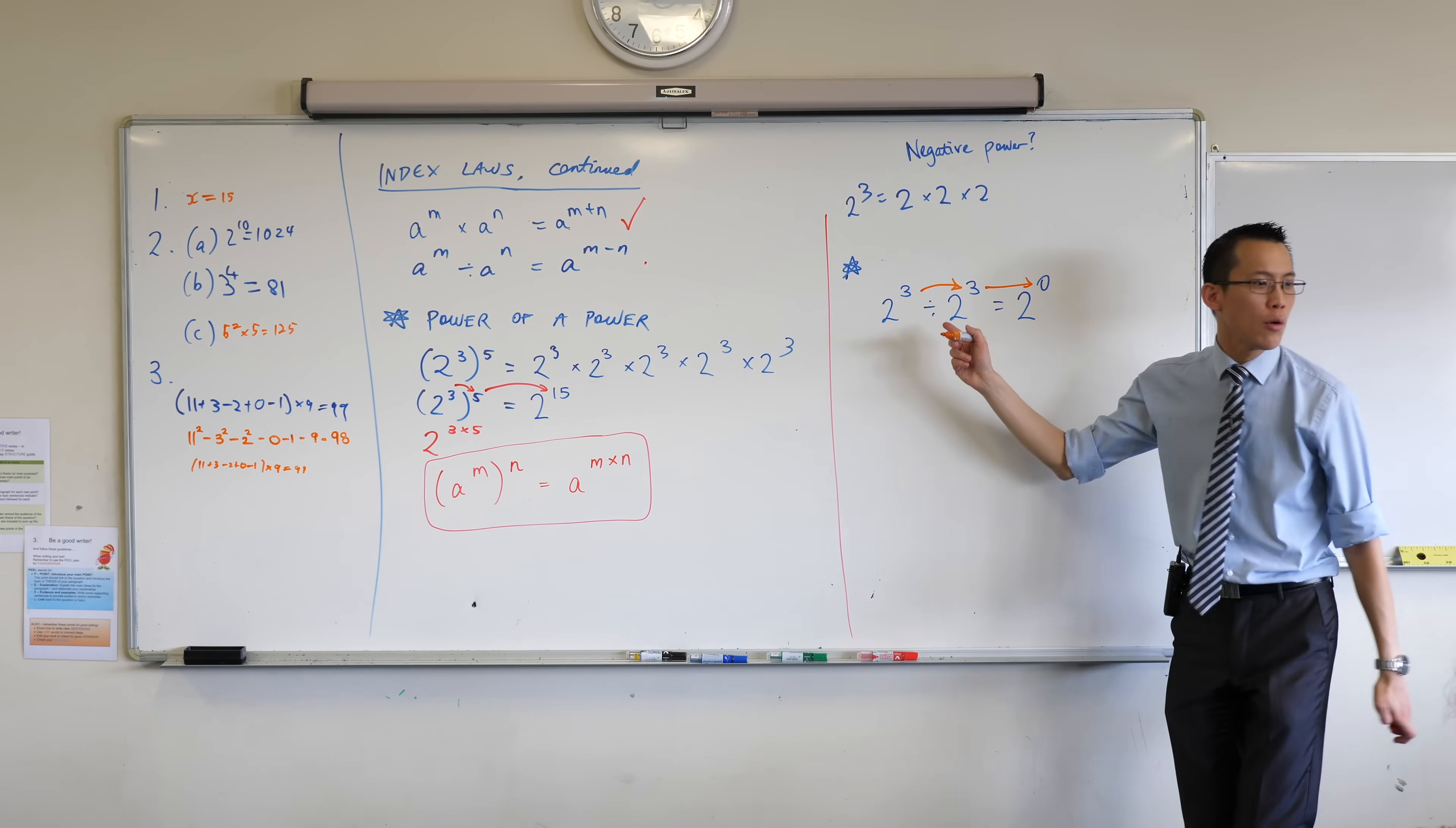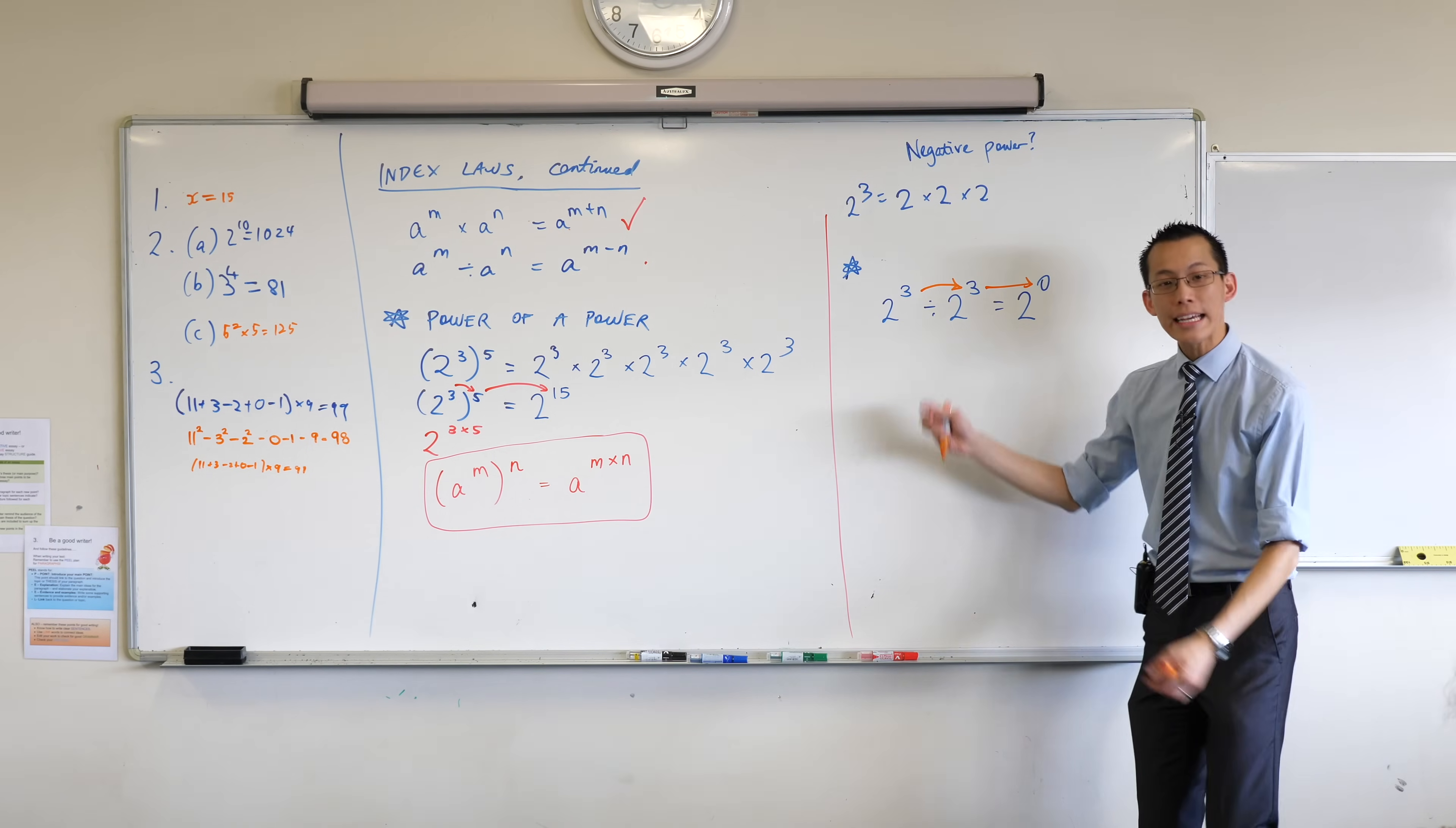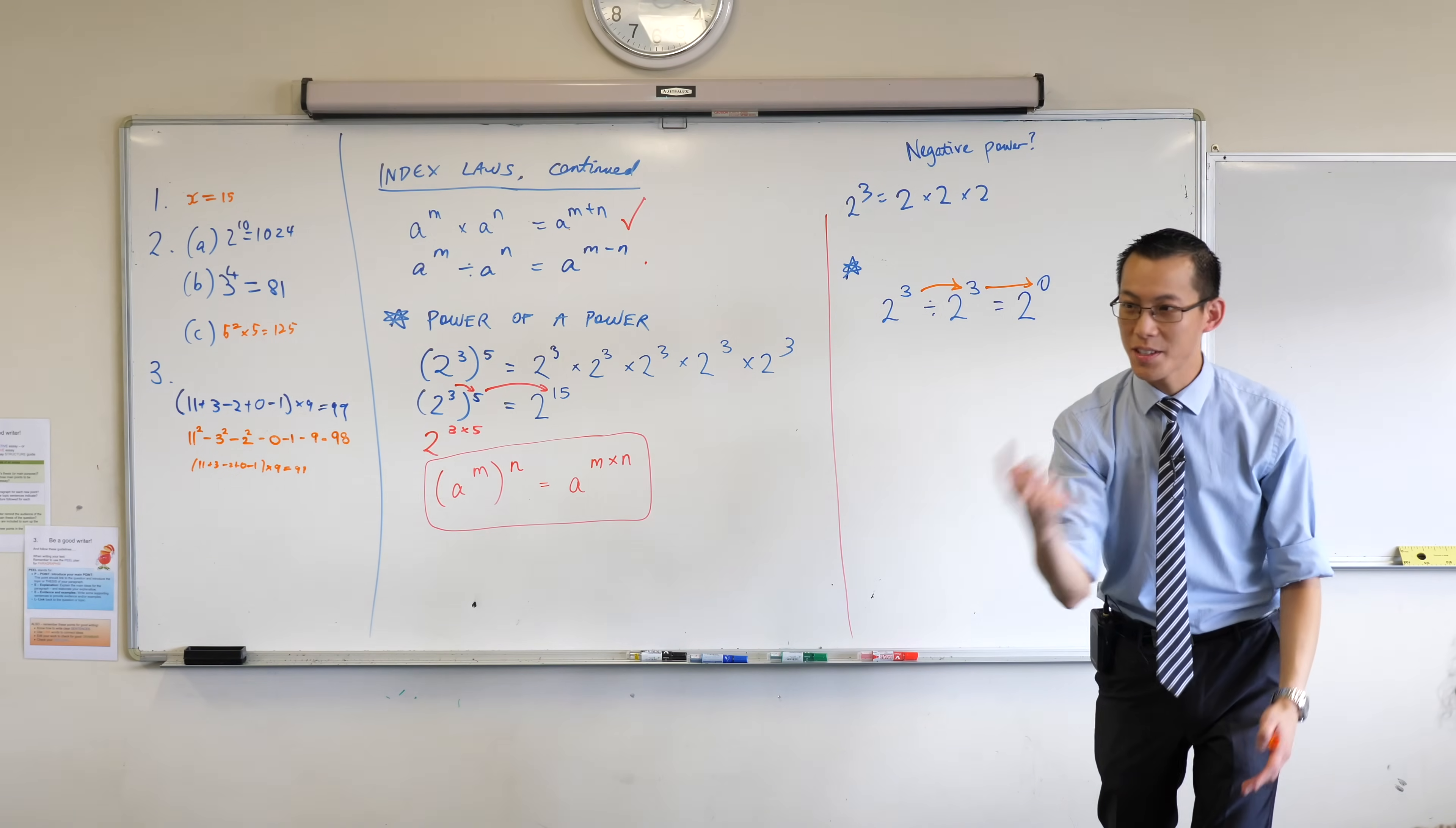But wait a second. You know what 2 cubed is, don't you? What's it actually equal to? It's actually equal to 8. If I gave you a question, 8 divided by 8, what would you say the answer was? Yeah, there is. You'd say it's 1, right?